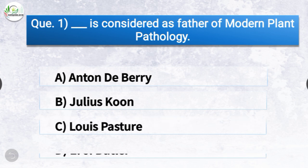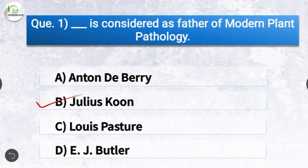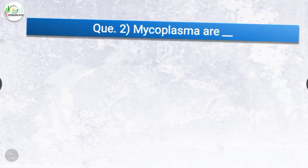Question number one: Dash is considered as father of modern plant pathology. The options are Anton de Bary, Julius Kuhn, Louis Pasteur, or EJ Butler. The correct answer is option B, Julius Kuhn. Julius Kuhn is considered as father of modern plant pathology, whereas Anton de Bary is considered as father of plant pathology and Louis Pasteur is considered as father of microbiology.